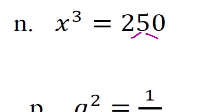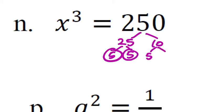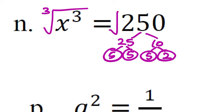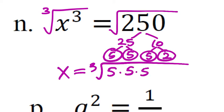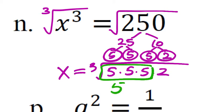Part N: x³=250. Take the cube root of both sides. Factor 250: I'll use 25×10. 25=5×5, 10=5×2, all prime. So we have the cube root of 5×5×5×2. There's a triple set of 5s — the cube root of those three 5s is just 5. The 2 has no match, so it stays inside as the cube root of 2. Therefore x=5∛2.